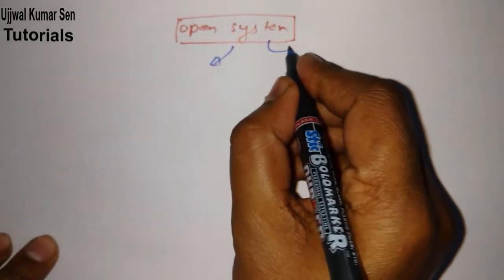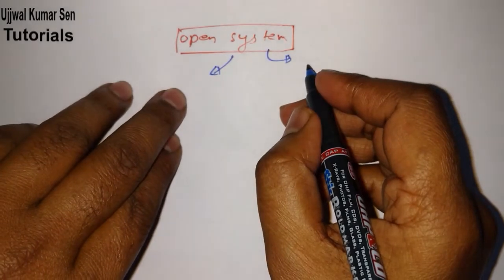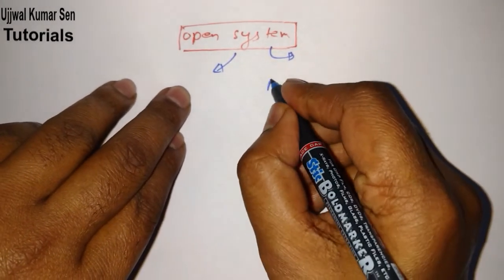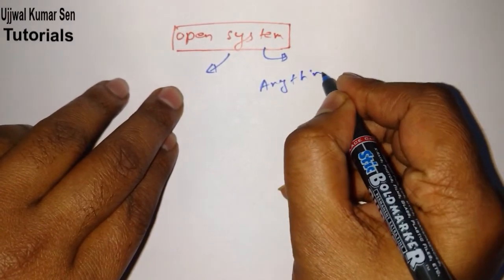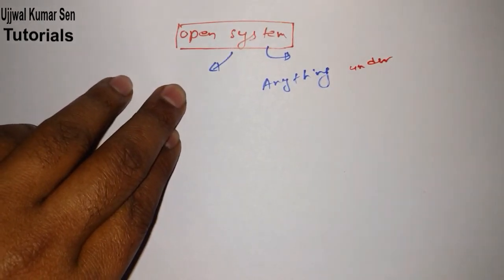What is basically an open system? First of all, you need to know what a system is. A system is basically anything under consideration or attention.